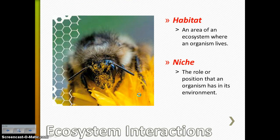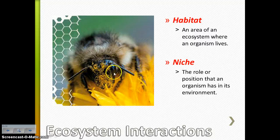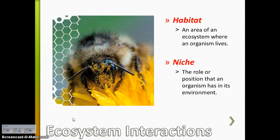A couple of vocab terms before we move on — you probably already have heard these words before. A habitat is simply where an organism lives. A niche is the role that an organism has in its environment. So our bumblebee here — while we may not love them — they do have a niche in the environment that they live in. They are pollinators. So that would be a role that it plays in its environment.